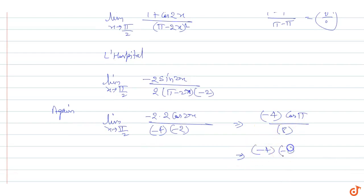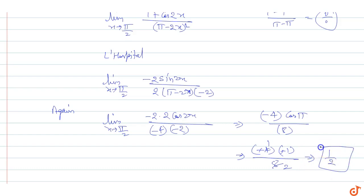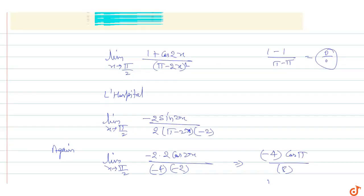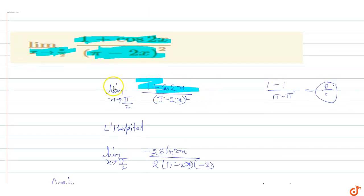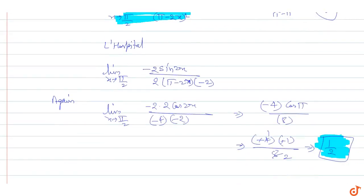Simplifying: cos(π) = -1, so the negatives cancel, giving us 4/8 = 1/2. Therefore, the limit of (1 + cos2x) / (π - 2x)² as x tends to π/2 equals 1/2. So 1/2 is the answer to this question.